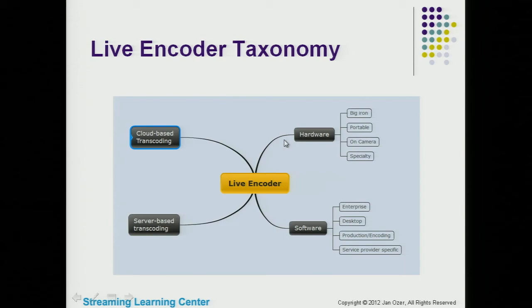There's hardware encoding with four categories, software encoding with four categories, and then I combine cloud-based transcoding and server-based transcoding into one. Wowza offers a server-based transcode function — one stream in, multiple streams out — but you can also put it in the cloud. Coolabyte, which is a HayVision subsidiary, is the same: you can buy it for your own server or put it in the cloud.